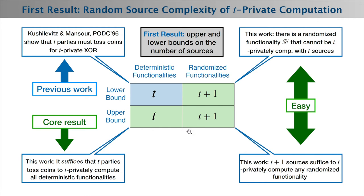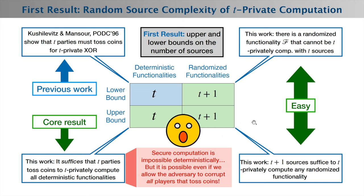But the most surprising and core result of our work is that if you only want to compute deterministic functionalities—which is still a very wide variety—it is sufficient that t parties have the ability to toss coins to t-privately compute all deterministic functionalities.